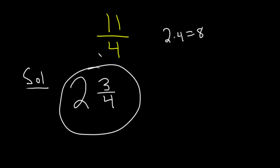And that would be the final answer for this particular problem — converting 11 fourths, which is an improper fraction, to a mixed number. We got the answer of two and three fourths. Hopefully this video has been helpful to someone who's trying to learn mathematics. Good luck.